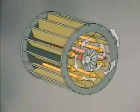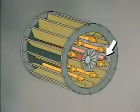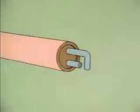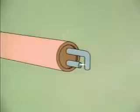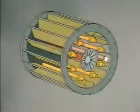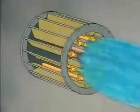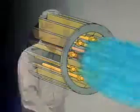An igniter starts the gas-air mixture burning. This one has a sparking device that uses electrical current to create a spark across a pair of electrodes. The spark ignites the gas-air mixture, and as it burns it provides heat for the boiler.